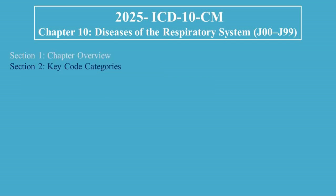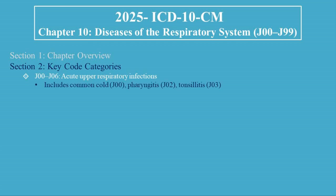Section 2: Key Code Categories. Let's look at the major code sections in Chapter 10. J00 to J06 covers Acute Upper Respiratory Infections, including the common cold (J00), pharyngitis (J02), and tonsillitis (J03). Example: J06.9, Acute Upper Respiratory Infection, Unspecified.